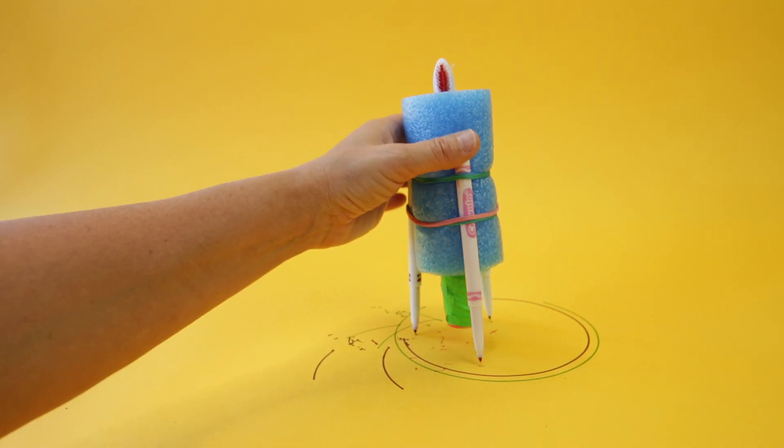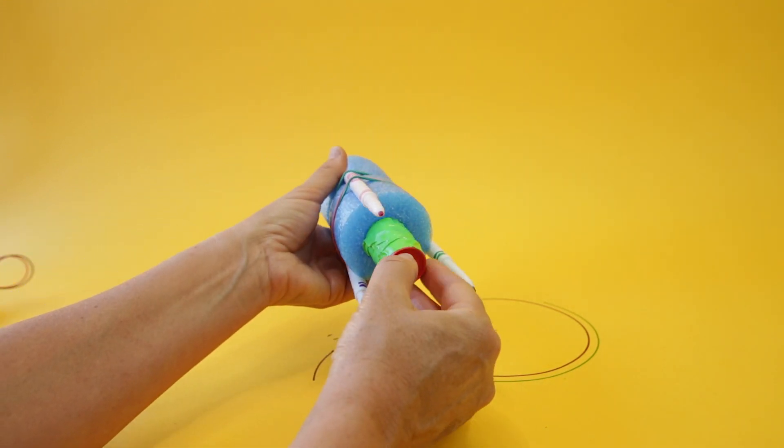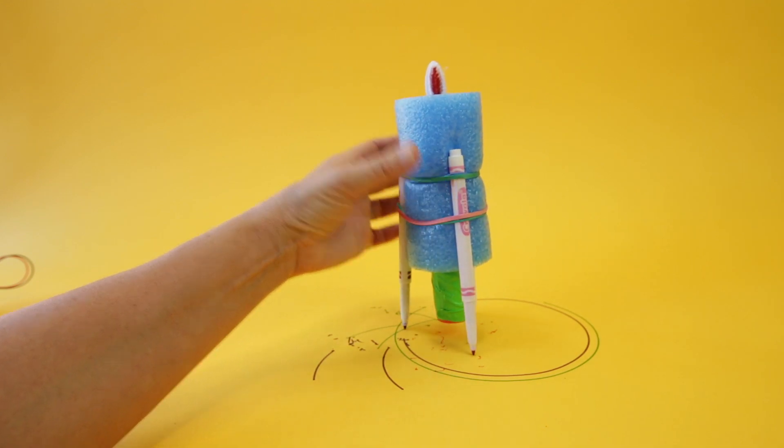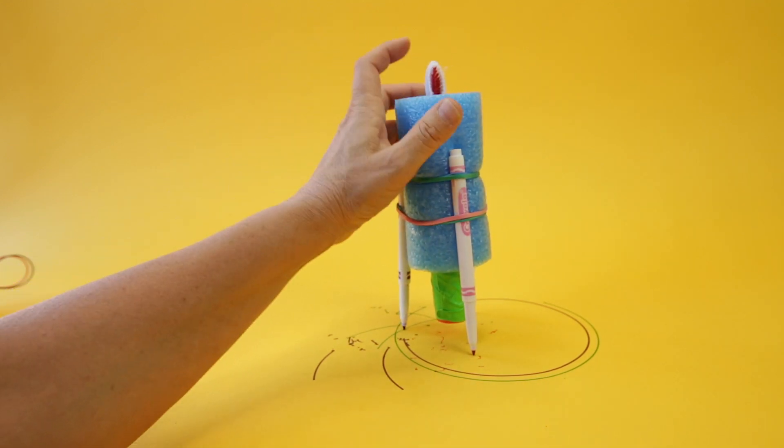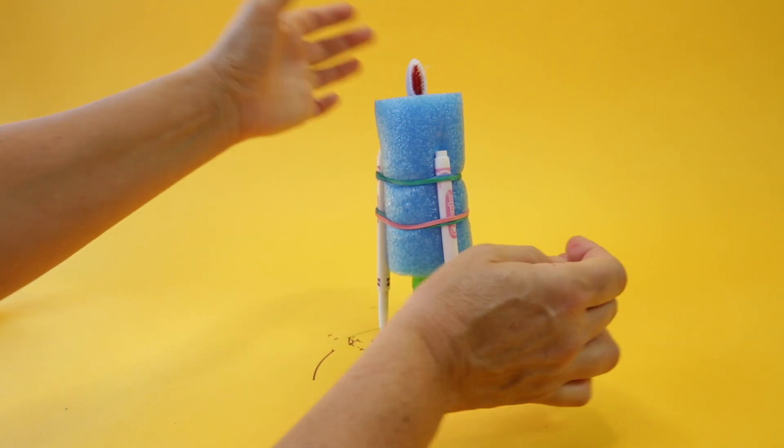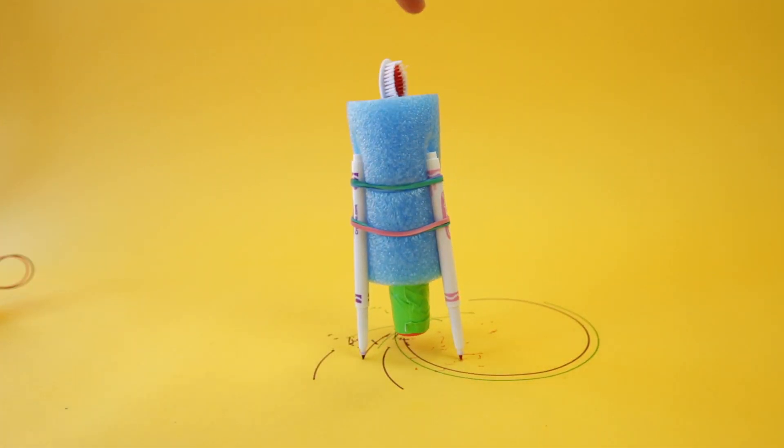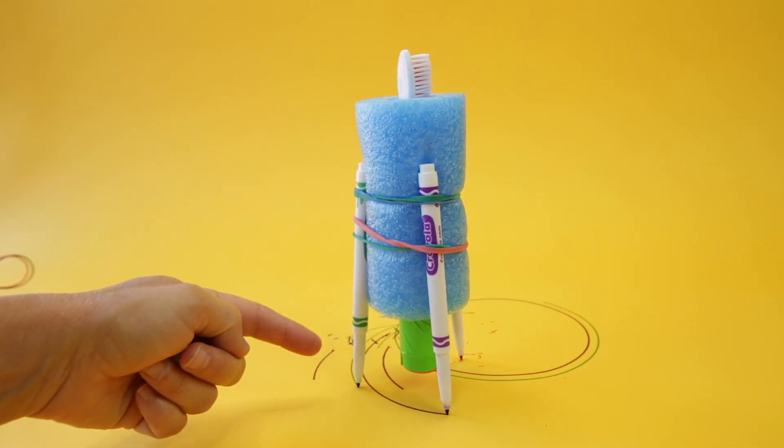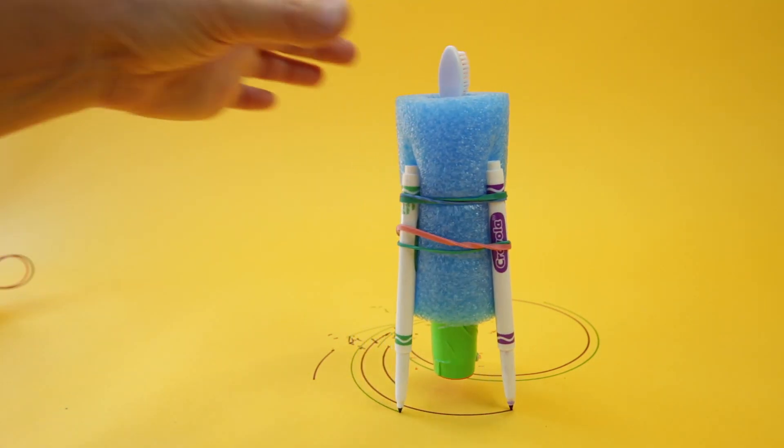Alright, let's talk specifically about the pool noodle bot and its movements. So when you turn this pool noodle bot on, what you're looking for is for the vibrations in the electric toothbrush to vibrate and cause the pool noodle to vibrate and that vibration is then translated down into the legs, which are markers.